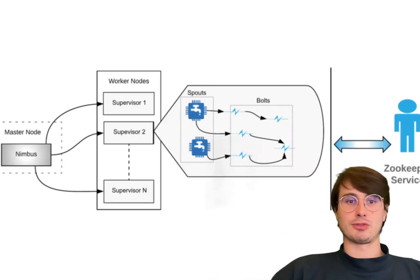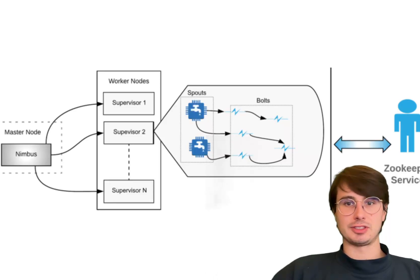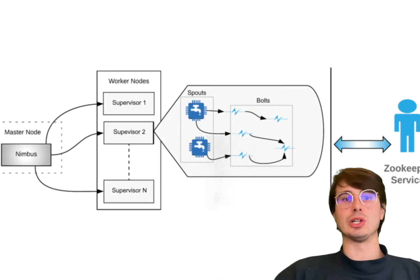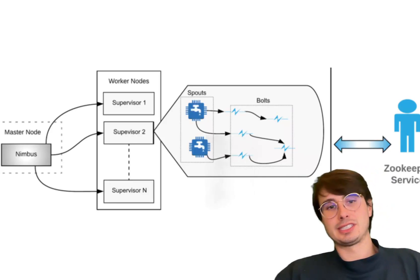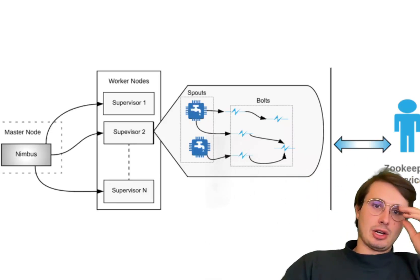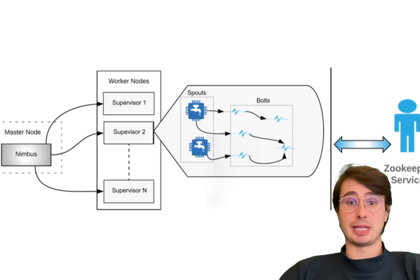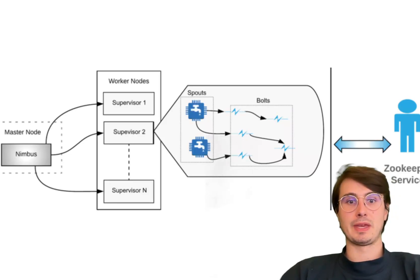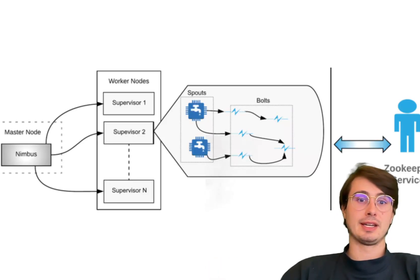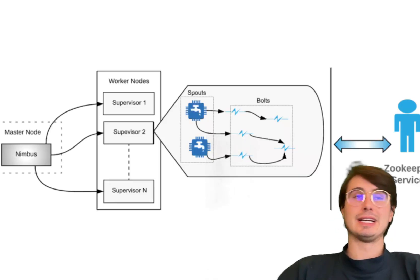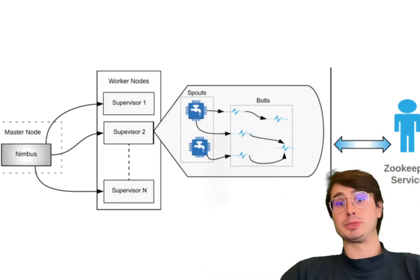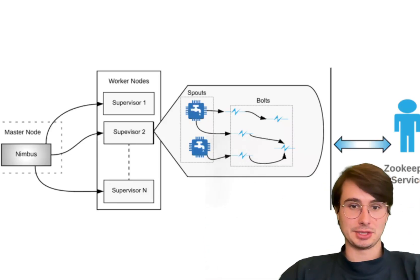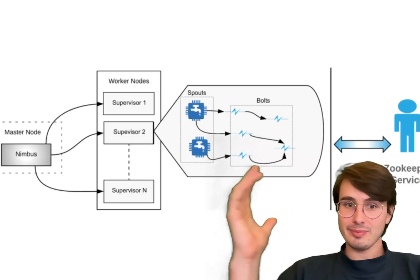Best use cases for Apache Storm: number one is real-time data ingestion — it's really effective for simple ingestion tasks like collecting sensor data or log events when you want low latency. Number two is stream processing with low complexity — applications requiring quick responses to simple events, like basic alerting systems, thrive on Storm's low-latency processing. Number three is high-throughput systems — if you need to process large volumes of data rapidly, like real-time bidding systems or monitoring platforms, Storm's architecture performs really efficiently.